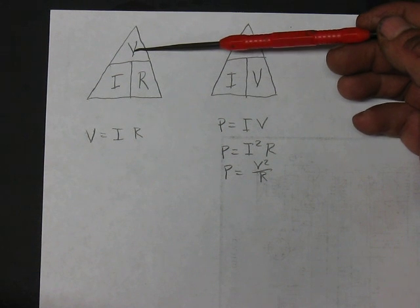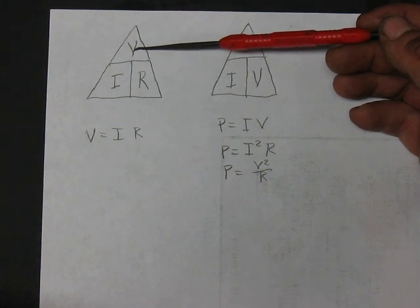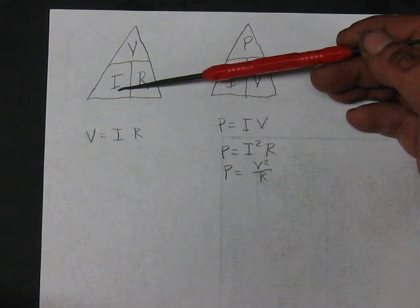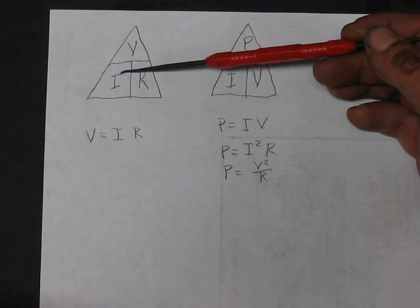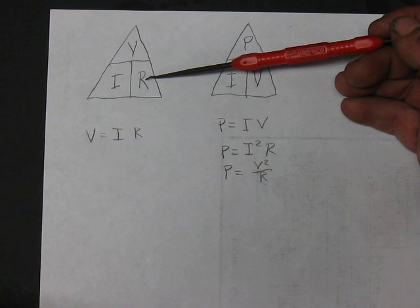This is voltage. V for voltage. You may, once in a blue moon, see it as E. E means electromotive force. So, if you do, don't let it bother you. This is your voltage. I is always for current. They always use I. Think of it kind of like intensity. And R for resistance.